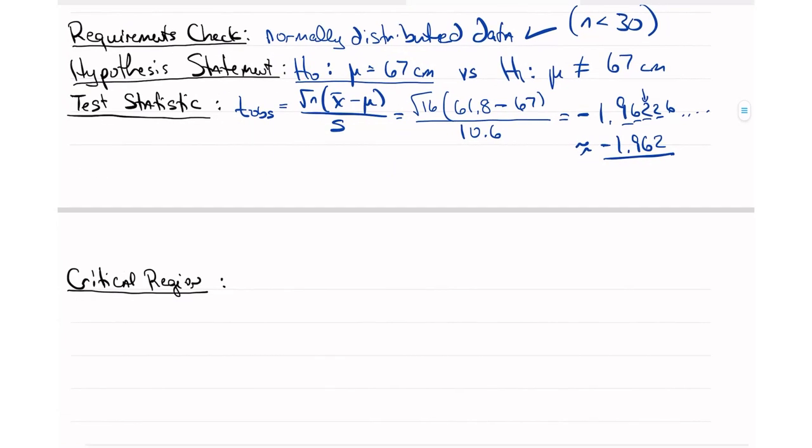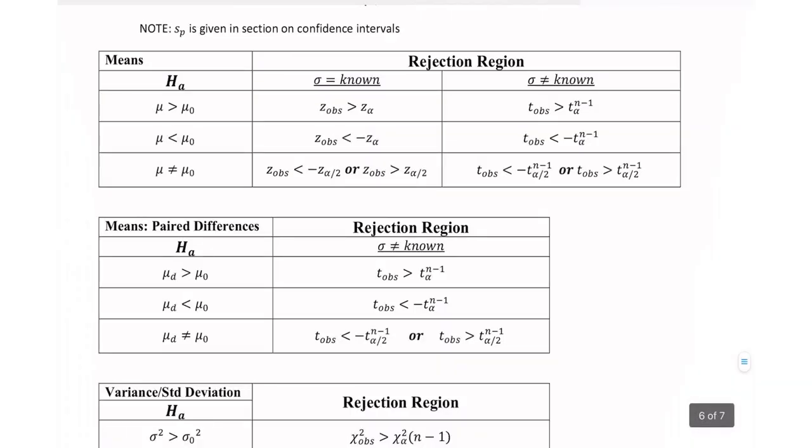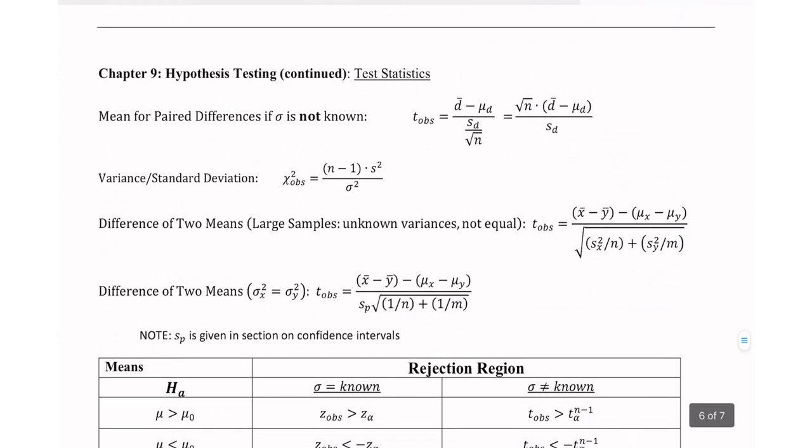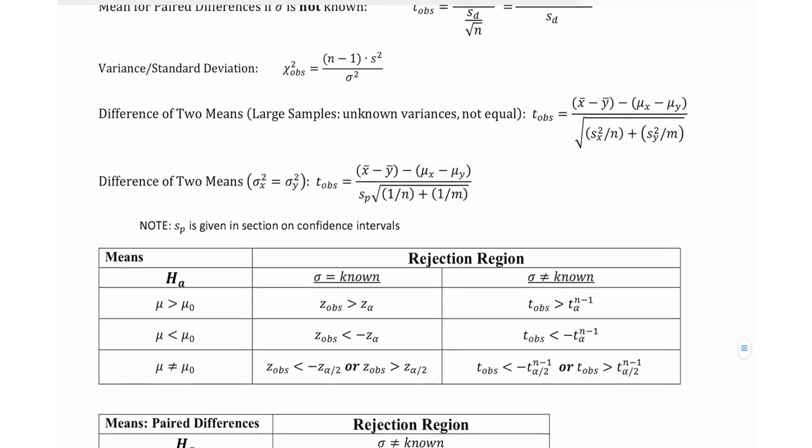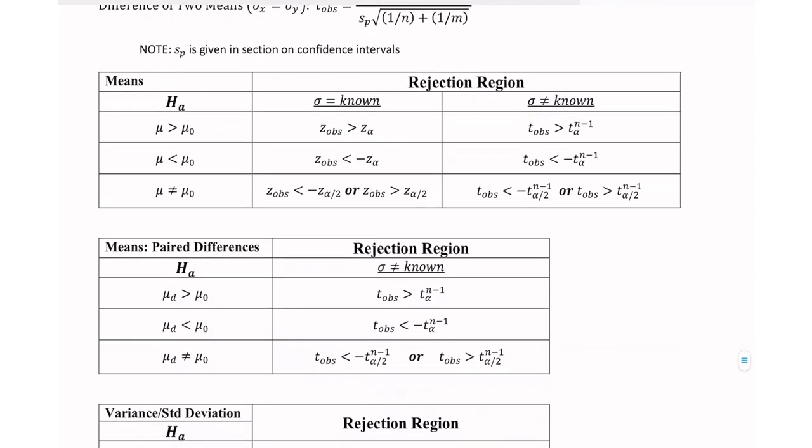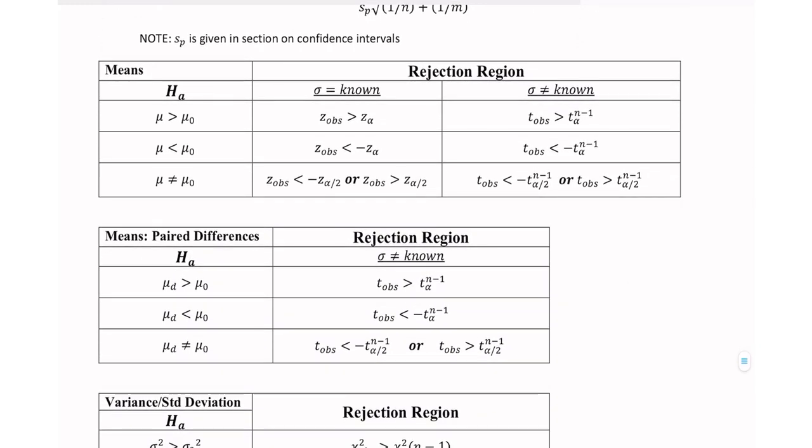So, my critical region. Now, because this is a critical value method, let's go to the formula sheet that I have provided you, and we go down to chapter 9, hypothesis testing, and then we get to a point that says these tables that say rejection regions.